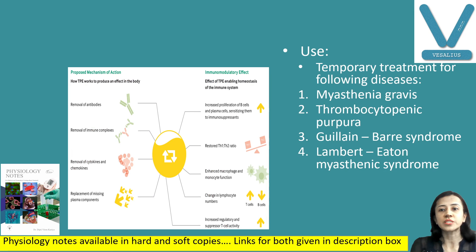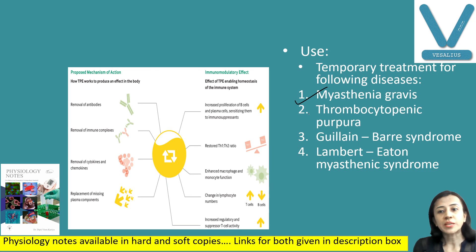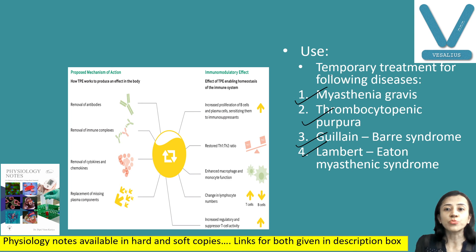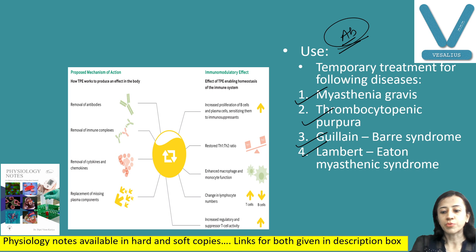The practical use of Plasma Pheresis: it is used for the temporary treatment of various diseases like myasthenia gravis, thrombocytopenic purpura, Guillain-Barré syndrome, and Lambert-Eaton syndrome. In those autoimmune diseases, antibodies are produced against our own tissues. These antibodies are removed along with the plasma, and new cells are transfused — this is the practical importance.